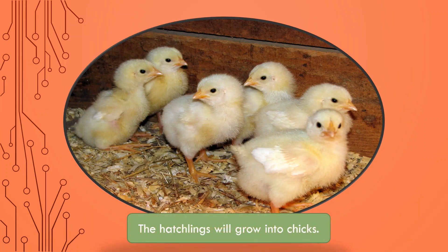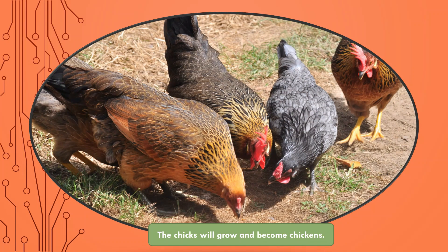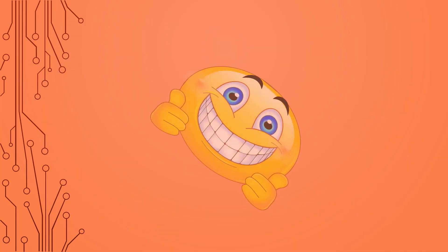The hatchling will grow into chicks. The chicks will grow and become chickens. The life cycle begins again to ensure that their kind will continue to exist in the planet. Thumbs up for everyone in the air.